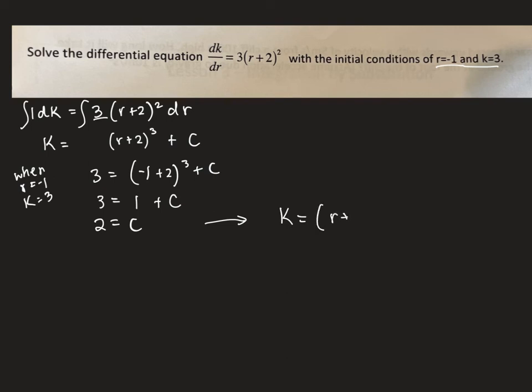And then we just sub that into our equation: k equals (r+2)³ and then plus our C value of two. And there we go, that would be our original equation that they gave us the derivative for. Alright, I hope that helped you out.